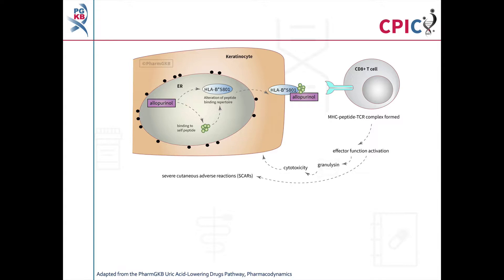Allopurinol binds to self-peptides and the HLA-B*5801 allele. It is thought that this binding may occur in the endoplasmic reticulum of keratinocytes in the skin, as shown in this image. However, this has not been definitively shown. The exact mechanism of the binding between allopurinol, HLA-B*5801 and self-peptides is also not known.